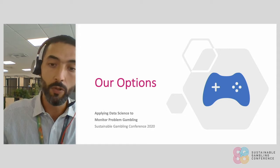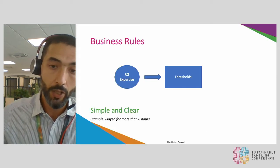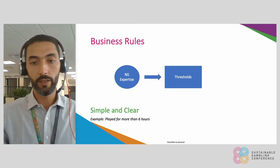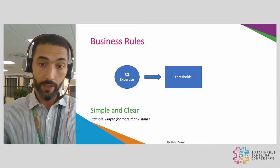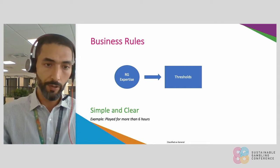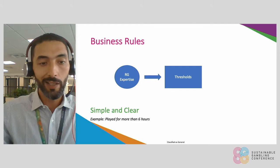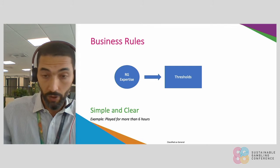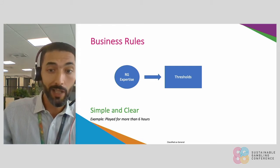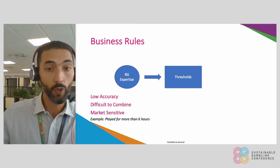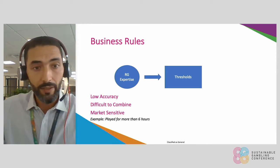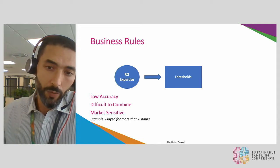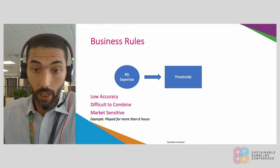What are our options to solve that challenge? The first one is business rules. We have some RG expertise internally and they define thresholds. It's simple and clear — thresholds such as highlighting every player who played for more than six hours in a row, which is good because it's simple and clear. You know exactly what you're looking at. However, the problem is that you get low accuracy because it's very hard to pinpoint a single variable that will highlight RG behavior.